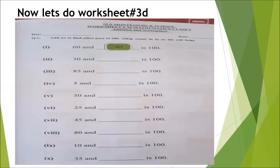Children, I hope you have done the previous worksheet correctly. Now let's move to worksheet number 3D. In this worksheet you have to make 100. The first part is already given and you have to find the other part by skip counting in 5s or 10s.